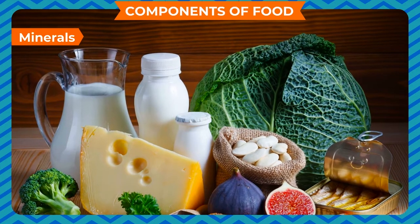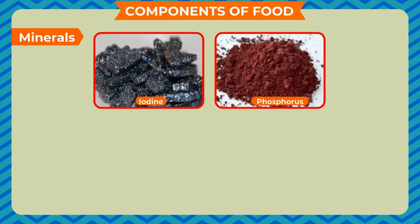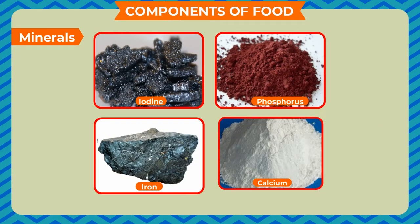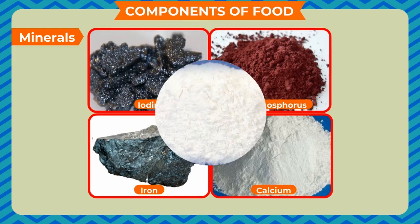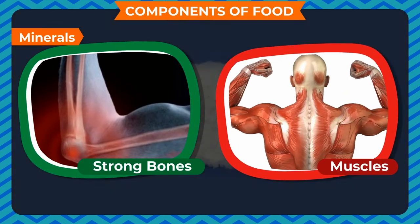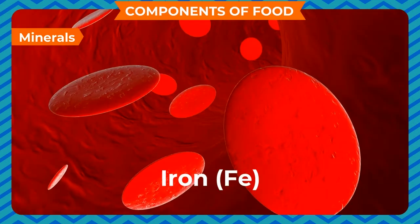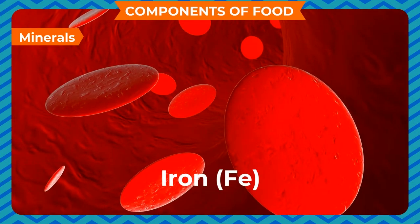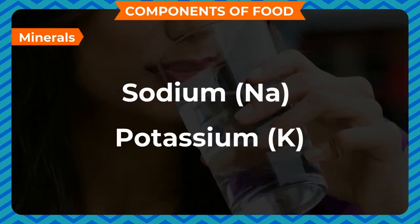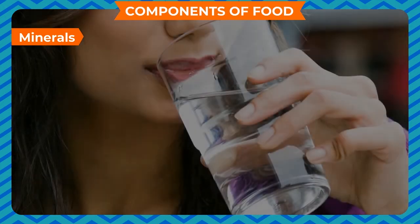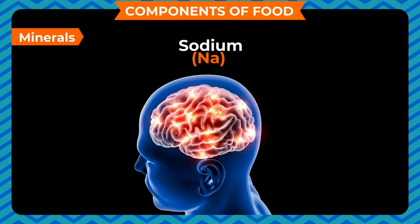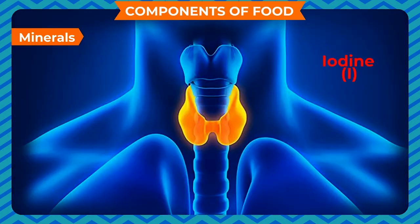Some important minerals are iodine, phosphorus, iron, and calcium. Calcium is needed for strong bones and muscles and also helps in clotting of blood in case of injury. Iron is needed for the formation of hemoglobin in the blood. Sodium and potassium help to maintain water balance in our body. Sodium is needed for sending messages to and from the brain to various body parts. Iodine is needed for the proper functioning of the thyroid gland.